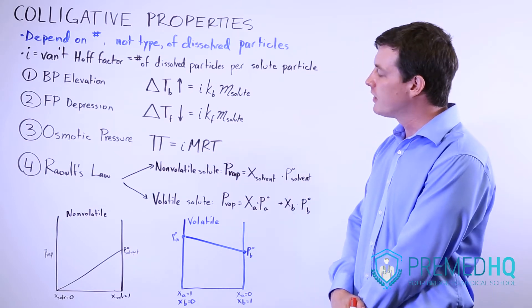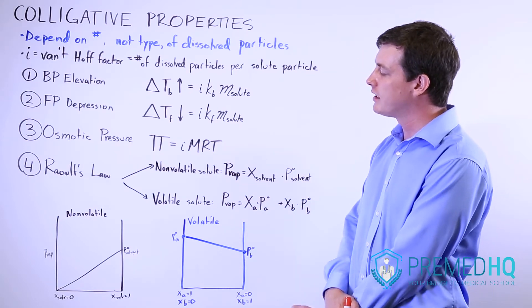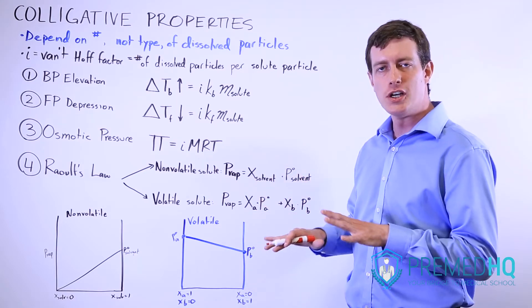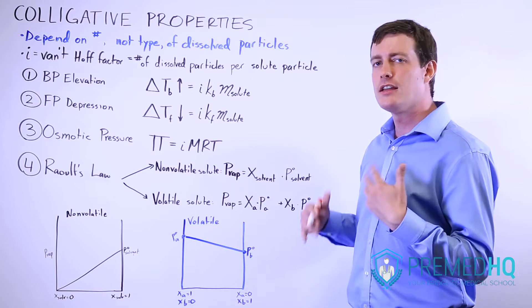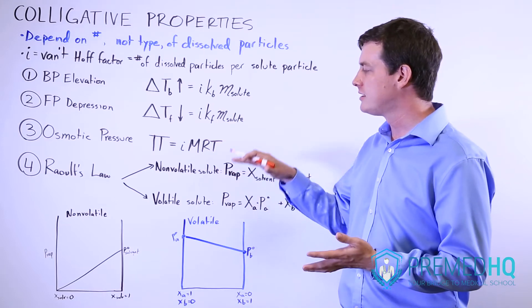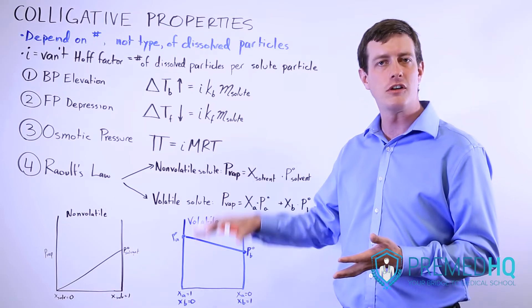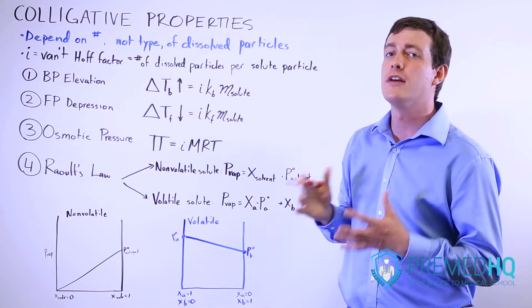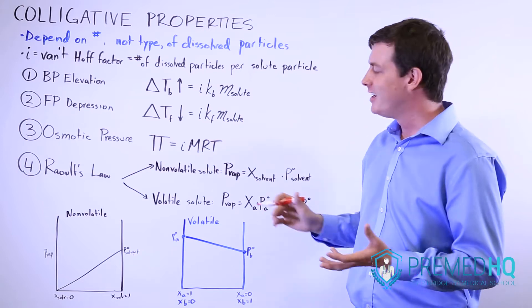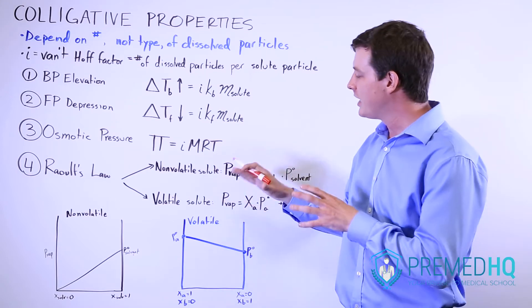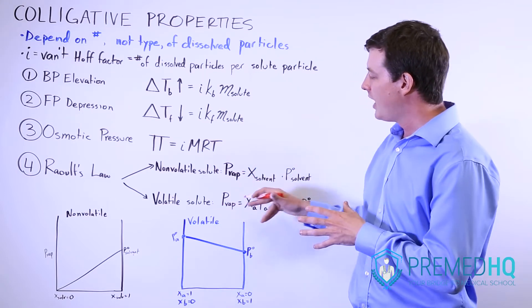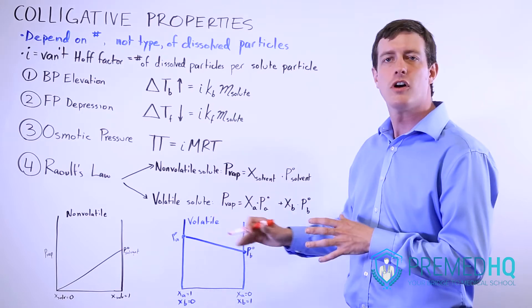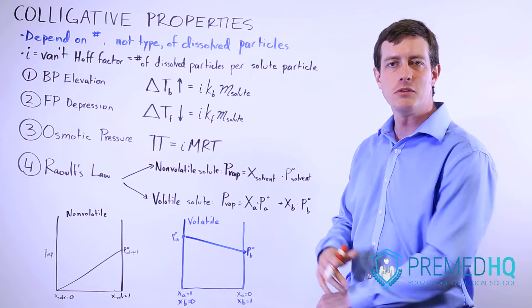Raoult's Law is very important because it examines the effect a solute has on the vapor pressure over a solution. A non-volatile solute does nothing except lower the overall vapor pressure. A volatile solute contributes its own part, and you have to calculate what the overall vapor pressure over your solution will be.